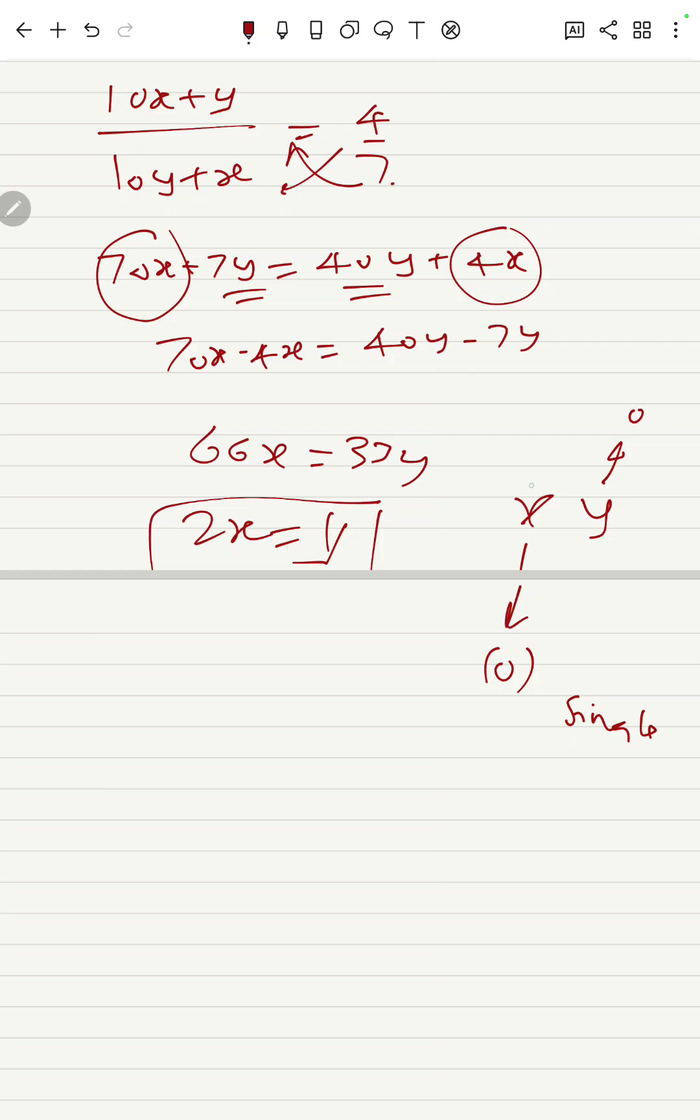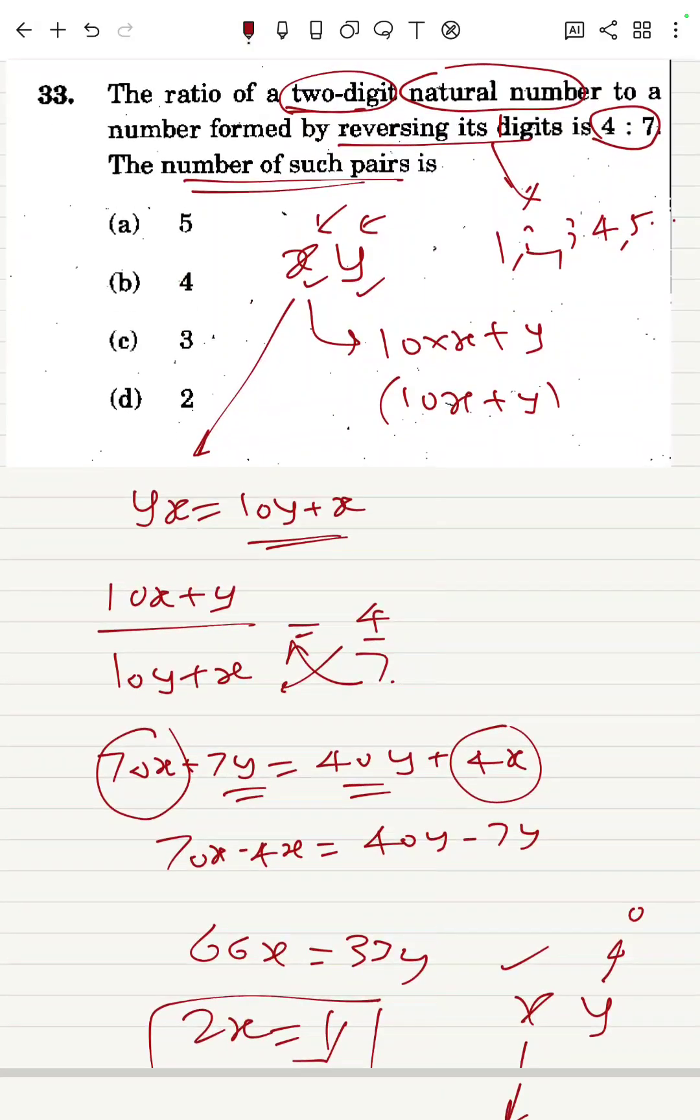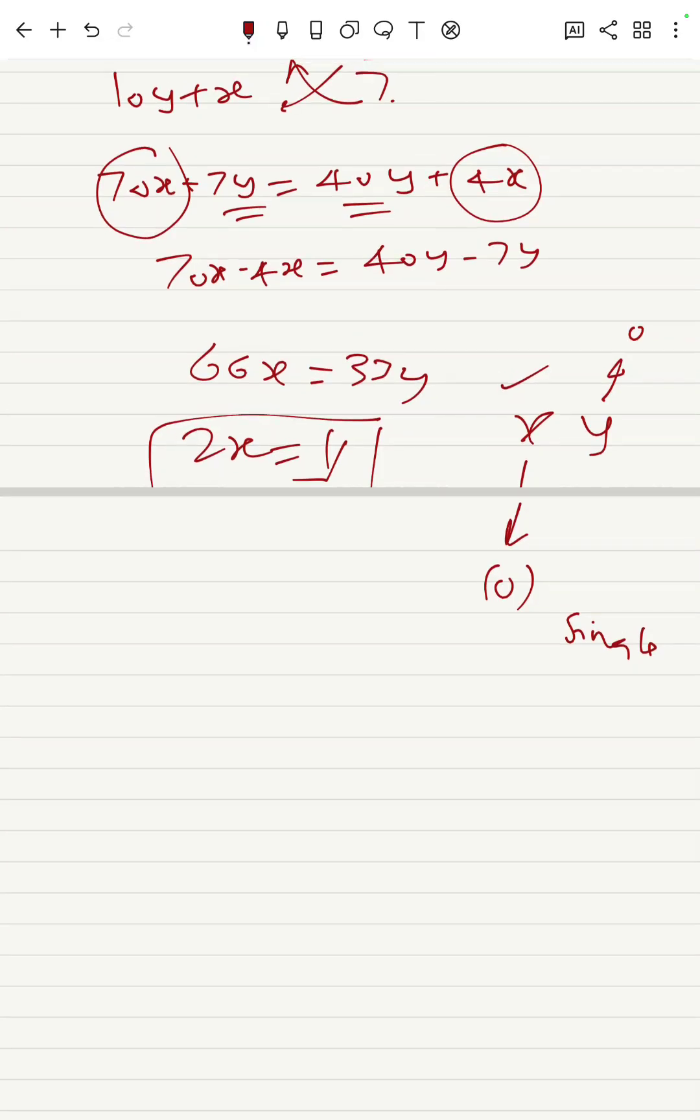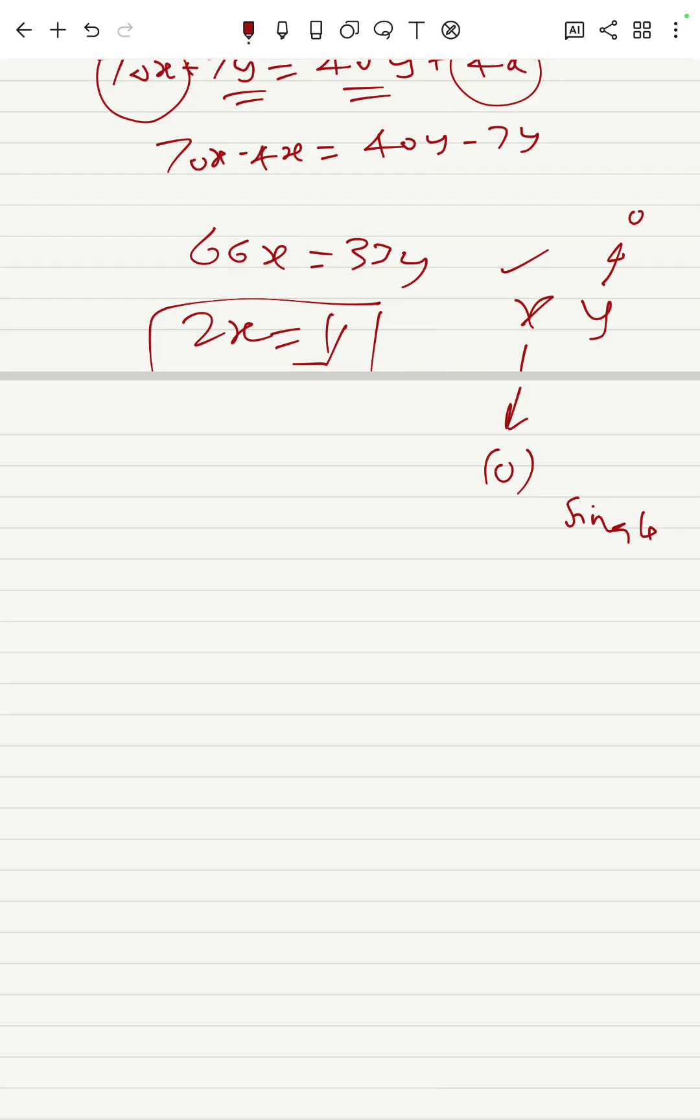Or I cannot take Y as zero because it will again become a single digit number when I reverse it. Similarly, if I take X equal to zero, on reversing that number it will become a single digit, not a two-digit number, because it is given that the ratio of the two-digit natural number to a number formed by reversing it is 4 to 7. So let's start.